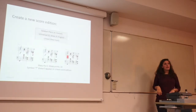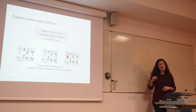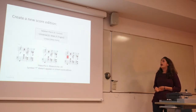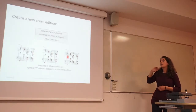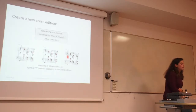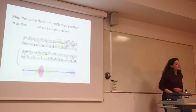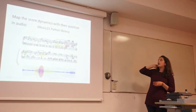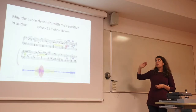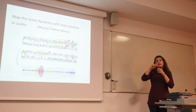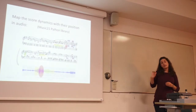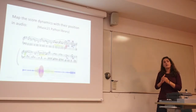We created a new score edition, being aware that there are many score editions and we don't know which ones the performers used when they recorded. We used three score editions and took the markings that appeared in at least two of them. Using the Music21 Python library, we created this score edition in XML and mapped the positions of the dynamic markings into the audio using information obtained from this library, which tells us where each dynamic marking is located.